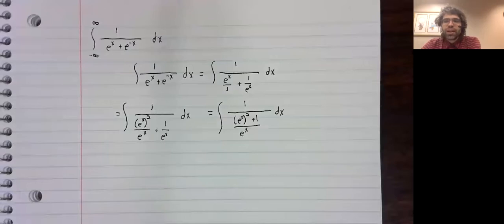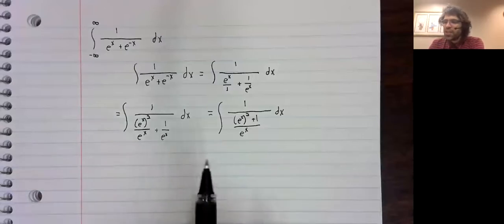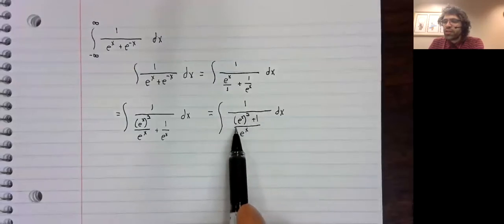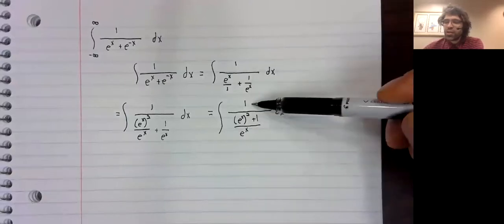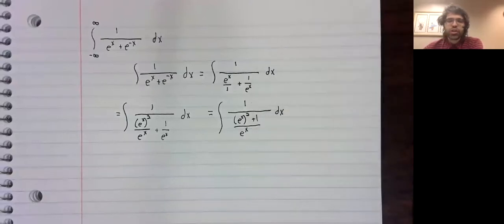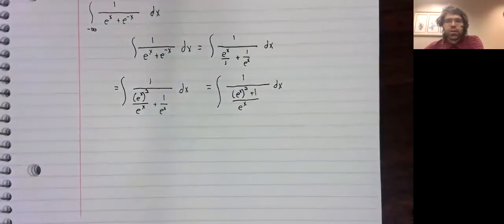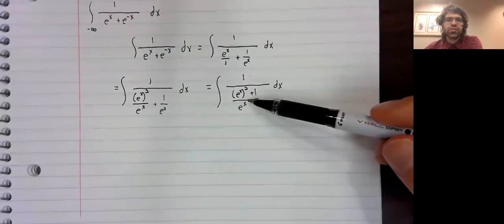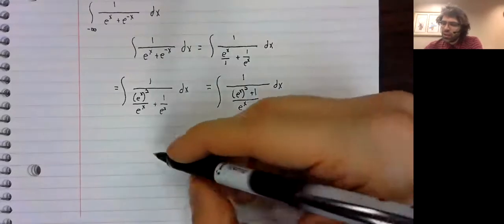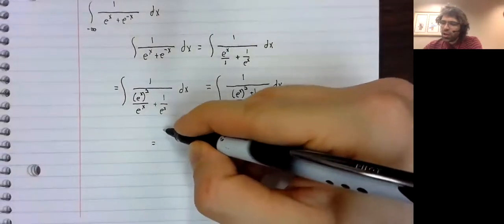But at least we see, perhaps we see something we can do with this. We don't love having fractions of fractions. So let's take this big fraction and multiply numerator and denominator by e to the x to clear this fraction in the denominator.